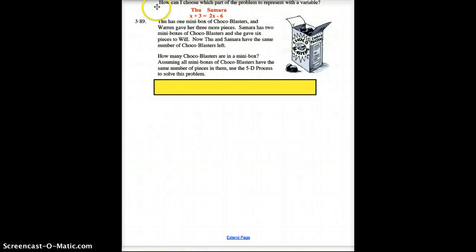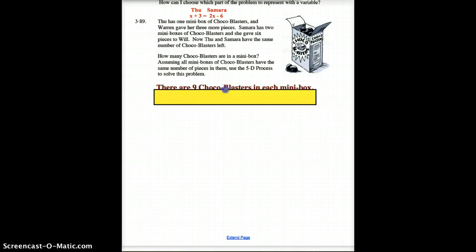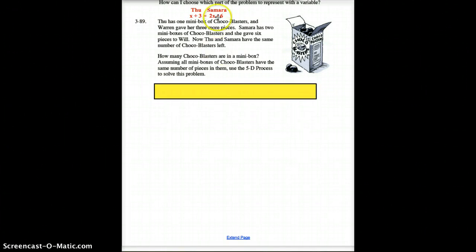I'm back in three, two, one. Alright, you should have your answer now. If you did this correctly and you plugged in numbers, ten was too much, eight was too little. Your answer should be that there are nine Cocoa Blasters in each mini box. I hope you got that. If you didn't get that, go back and look at it and try and plug in the numbers until you get the two to equal.